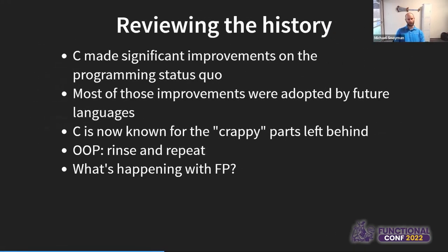Let's review the history. We had a language called C that made significant improvements on assembly — it introduced new concepts and new abstractions. Most of those improvements were then adopted by languages that came later. You don't notice because it became so common that every other language was doing them. But some things were left behind — the things that weren't great, like having to manually manage memory. Those were left behind in favor of garbage collection, RAII, or other techniques. We modern programmers look back at C and all we see is the crappy parts that were left behind.